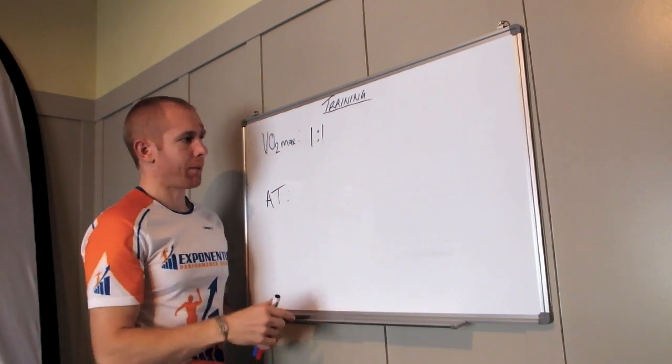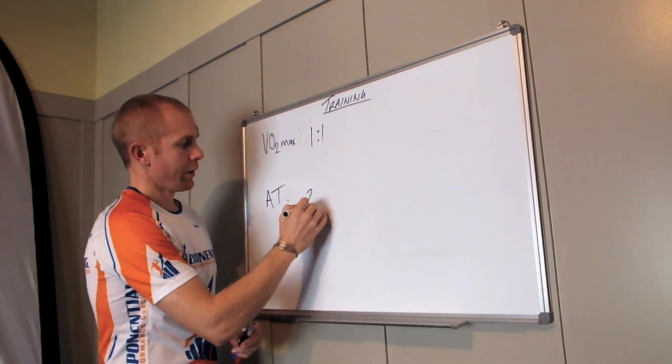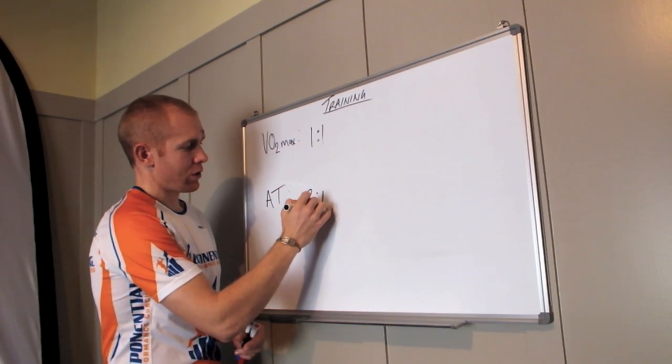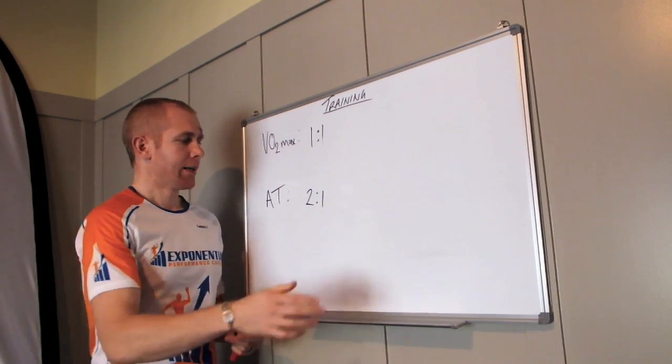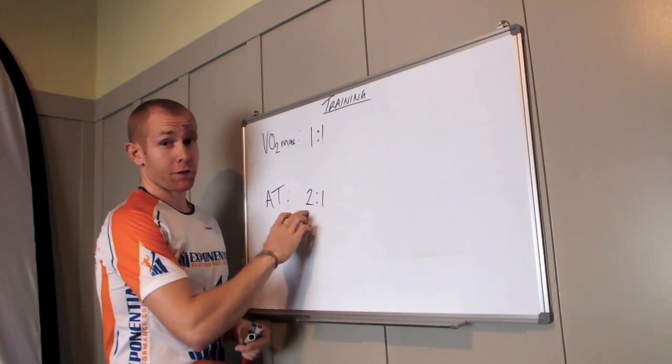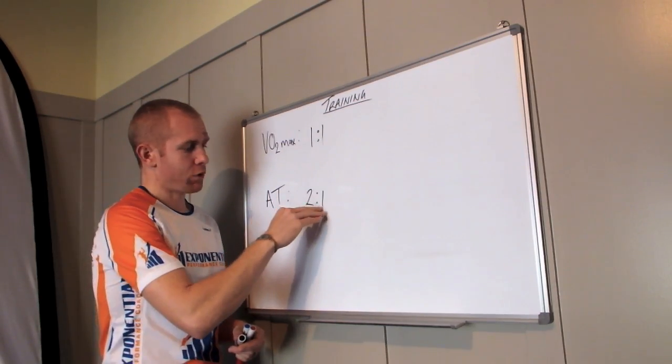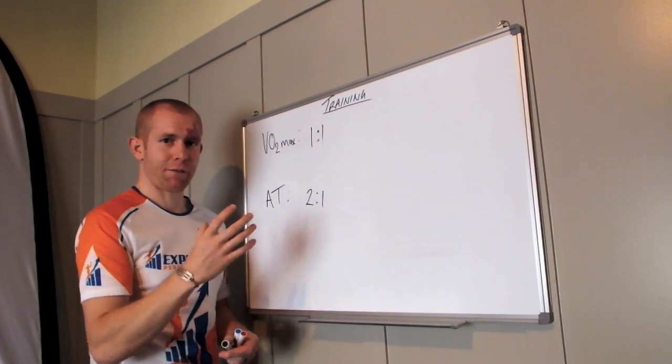On the other hand, with our anaerobic threshold, we want at least a two-to-one work-to-recovery ratio. So this means if we work for, say, four minutes, we have two minutes of recovery. So we have half the amount of time.